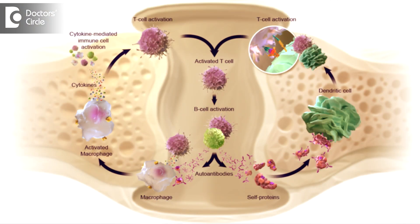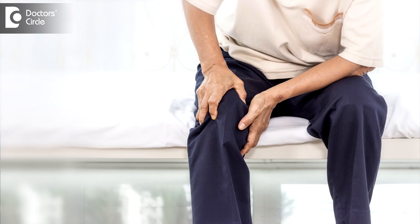Rheumatoid arthritis is an autoimmune disorder in which our own immune system reacts against the body's cells and causes damage. Whereas osteoarthritis is a wear and tear arthritis — it occurs because of wear and tear of the joint cartilage.